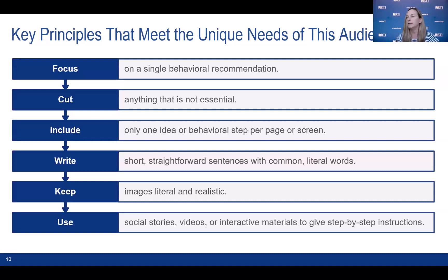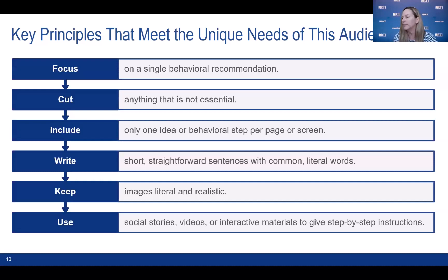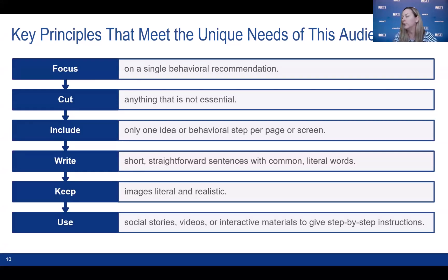You'll also want to cut anything that is not essential, and include only one idea or behavioral step per page or screen. We'll show you examples of what this might look like when we apply all of these principles. You'll also want to use images, keeping them literal and realistic, since pictures are incredibly important for people with extreme low literacy. You should also use alternative formats such as social stories, videos, and interactive materials to give step-by-step instructions on how to perform the behavioral recommendation.